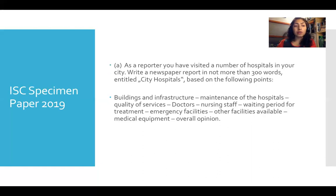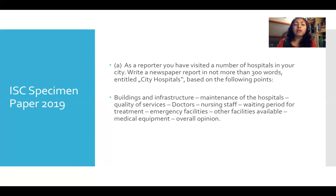Now let's have a look at the question given in the IASC specimen paper 2019. 'As a reporter, you have visited a number of hospitals in your city — write a newspaper report, not more than 300 words, entitled City Hospitals.' So you've been given the headline already. You could add a word or two to 'City Hospitals' if you want. The IASC people give you the points for your report, so please make sure you mention each and every point. Use a highlighter or a pencil to tick off the points as you include them.